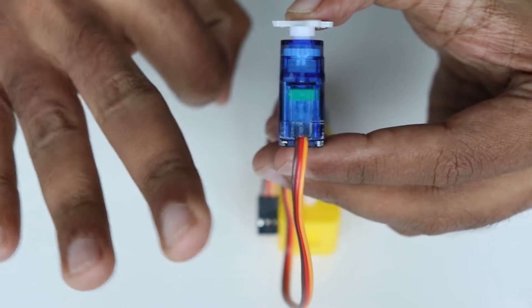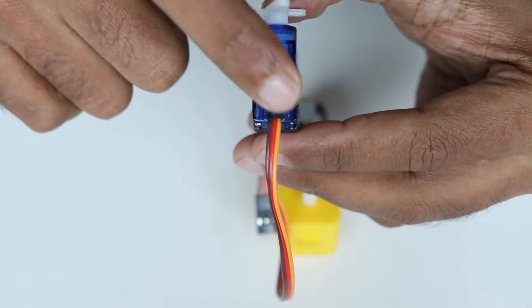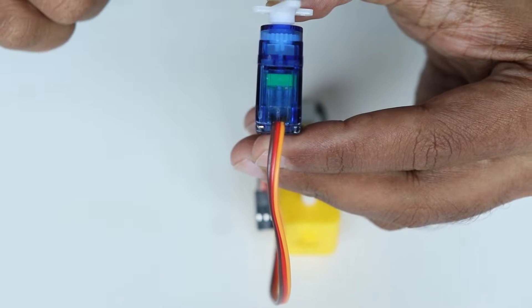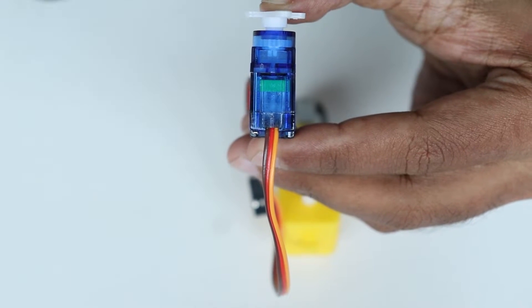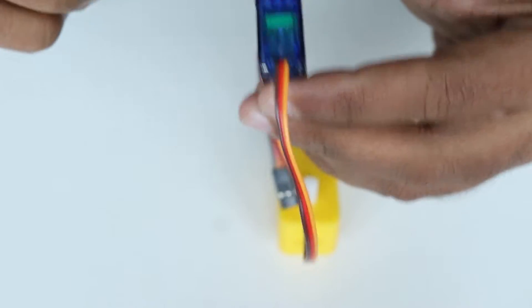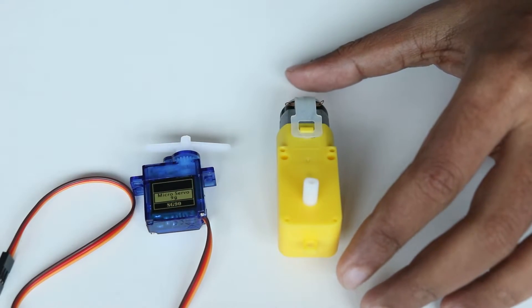Also unlike DC motor, servo motor has three terminals. One is for positive voltage, the other is for negative voltage, and then we have another additional terminal where we provide the input control signal. This is where we provide PWM signals or pulse width modulated signal, which control the position of the servo motor shaft.